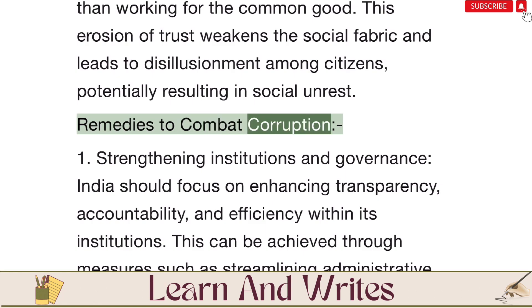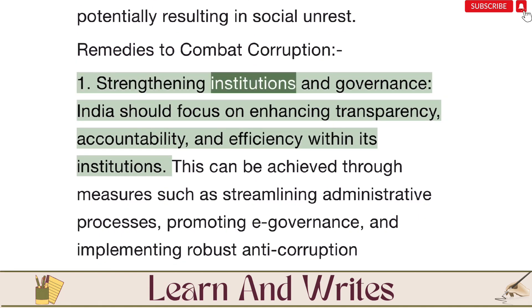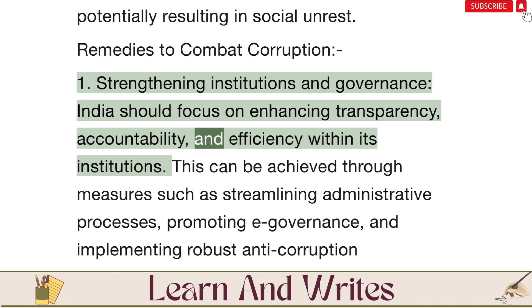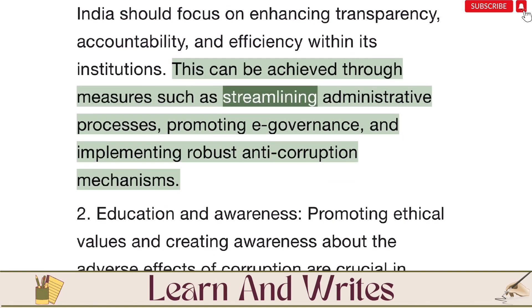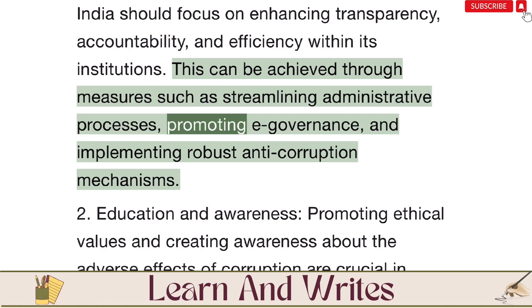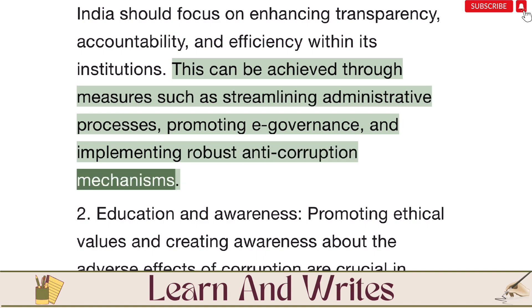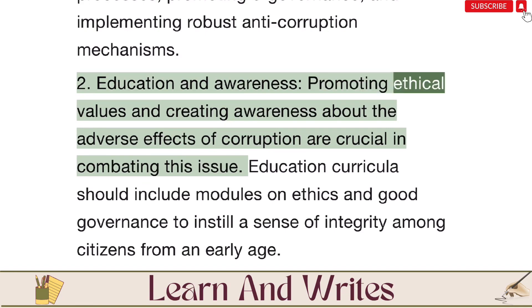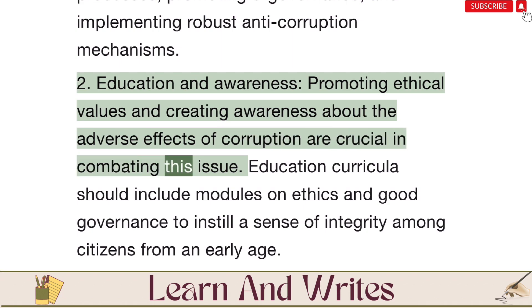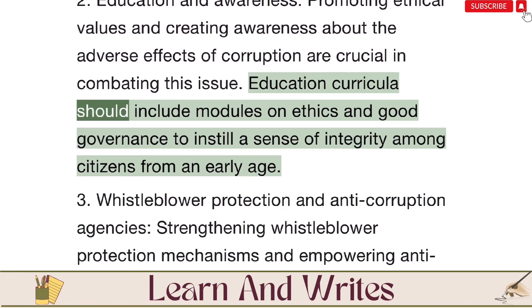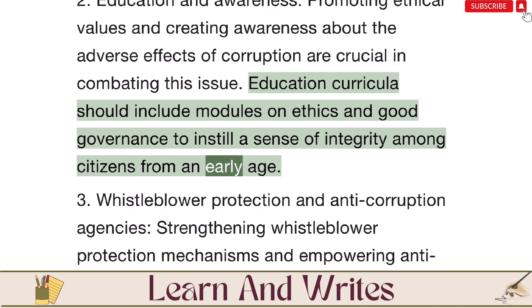Remedies to Combat Corruption. First, strengthening institutions and governance: India should focus on enhancing transparency, accountability, and efficiency within its institutions. This can be achieved through measures such as streamlining administrative processes, promoting e-governance, and implementing robust anti-corruption mechanisms. Second, education and awareness: promoting ethical values and creating awareness about the adverse effects of corruption are crucial in combating this issue. Education curricula should include modules on ethics and good governance to instill a sense of integrity among citizens from an early age.